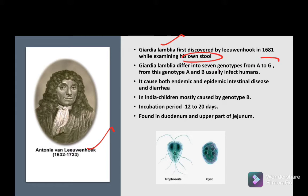Giardia lamblia differs into seven genotypes from A to G, from which A and B usually infect humans. It causes both endemic and epidemic intestinal disease and causes diarrhea. In India, mostly genotype B affects children.